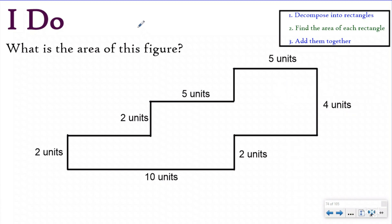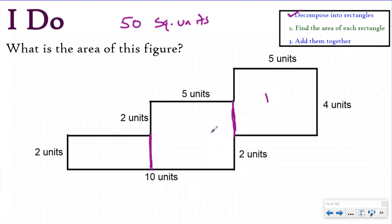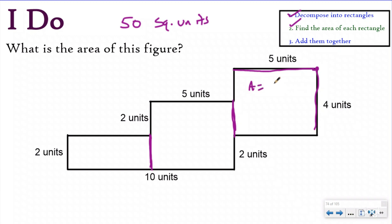We already know the area of this shape is 50 square units, but if we didn't have the unit squares covering it, how do we figure it out? We use the same exact steps: decompose into separate rectangles — one, two, and three — then find the area of each. We're going to use our area formula. The two dimensions for this first rectangle are five and four, so area equals five times four, giving us 20 square units.